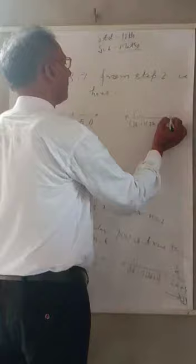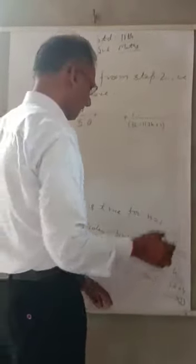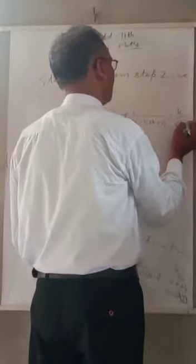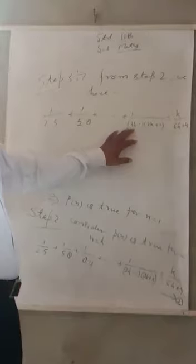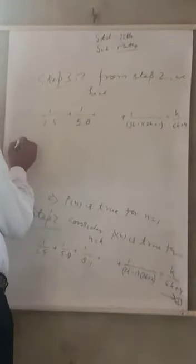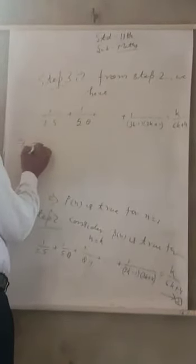This equals k/(6k+4). Now here, you have to prove this for k+1. So we add one more term forward. You don't have to copy all of this.